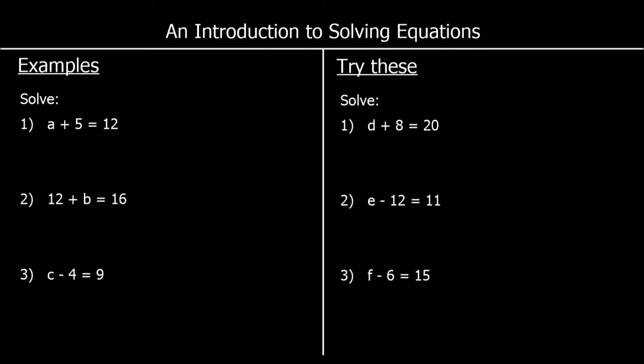In these examples, we are looking at solving equations. An equation tells us that two things are equal. So in the first question, we've got a plus 5 is equal to 12. So a plus 5 is worth the same as 12. When we solve an equation, we work out what an unknown number is. So at the moment, a in the first example is an unknown, and we are going to work out what a is worth. You can probably tell what a is worth just by looking at it, but I'm going to show you a method for solving equations which will work when they get more complicated.